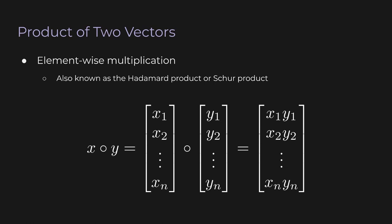Things get more interesting when we talk about multiplying vectors. There are actually different ways to multiply vectors. The first is element-wise multiplication, also known as the Hadamard product or Schur product. We write it as a circle between the two vectors. Both vectors need to have the same number of entries. You just multiply the corresponding entries: the result has x1·y1 in the first entry, x2·y2 in the second, and so on.